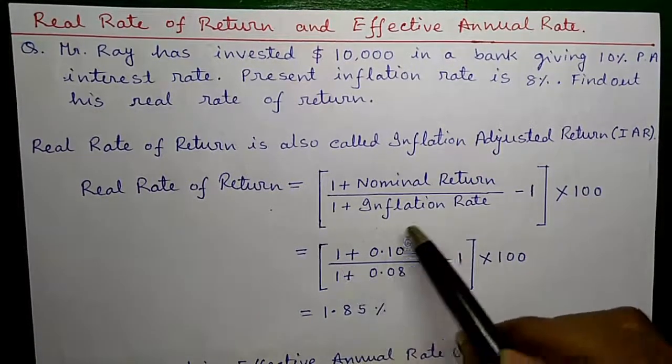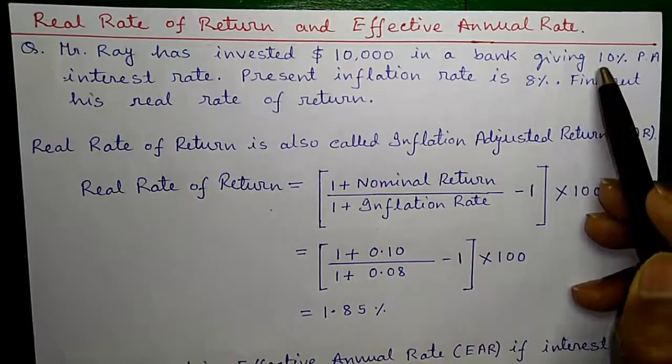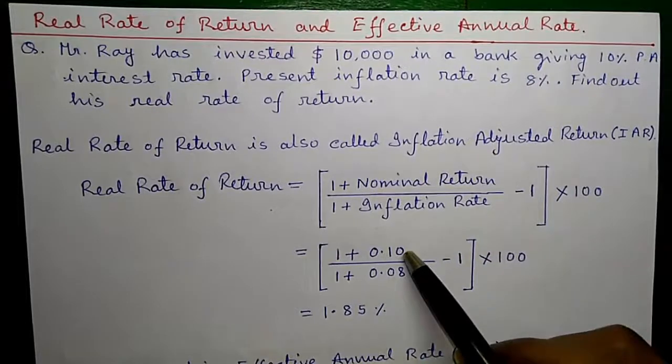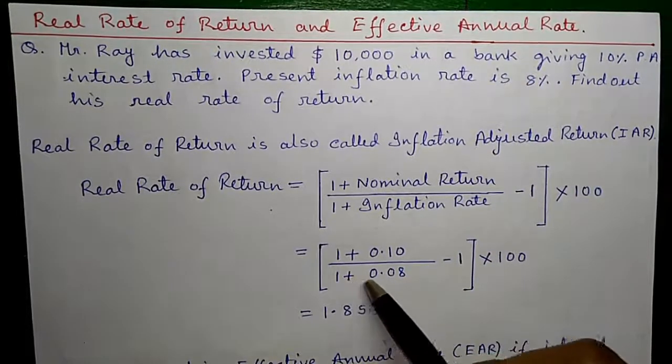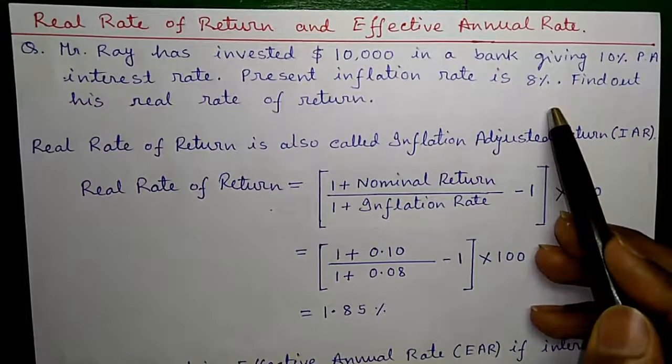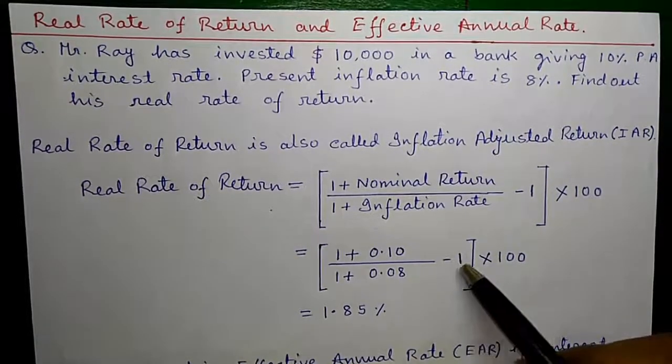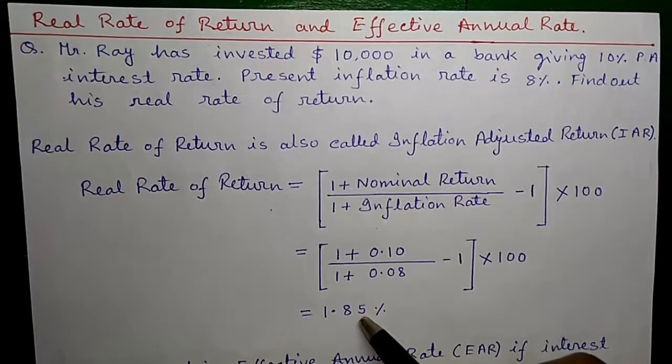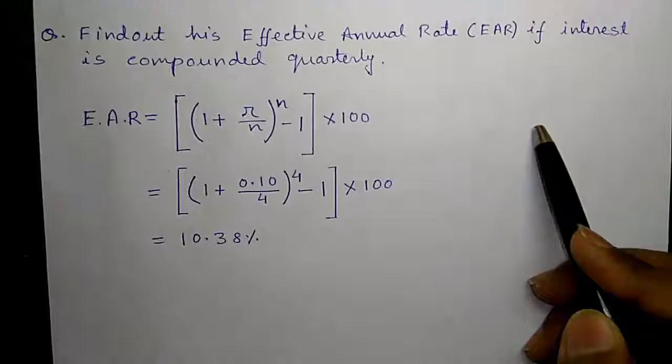1 plus nominal return is 10% per annum given by the bank divided by 100 is 0.10 divided by 1 plus inflation rate is 8% divided by 100 is 0.08 minus 1 into 100 equals to 1.85% per annum.